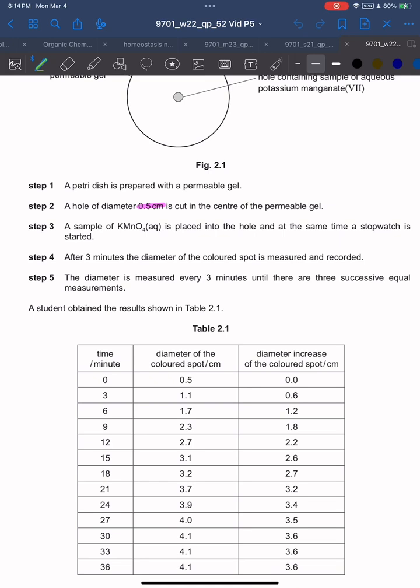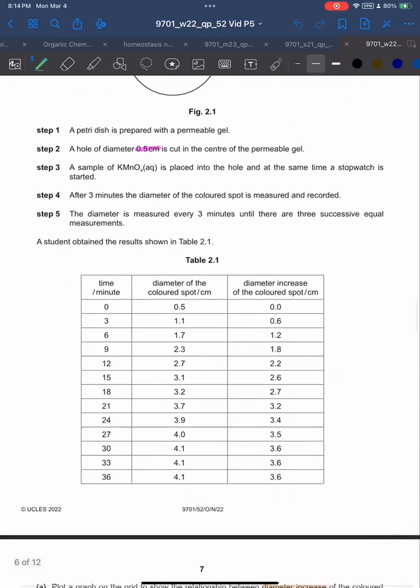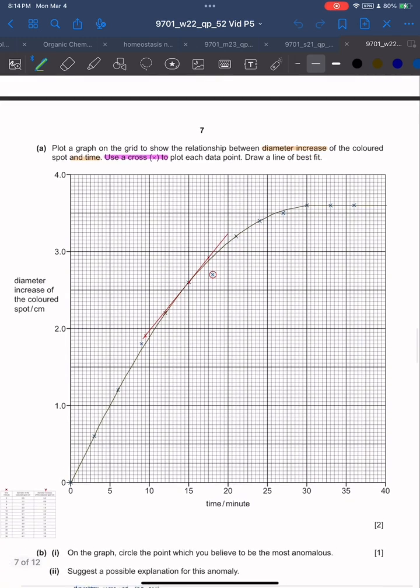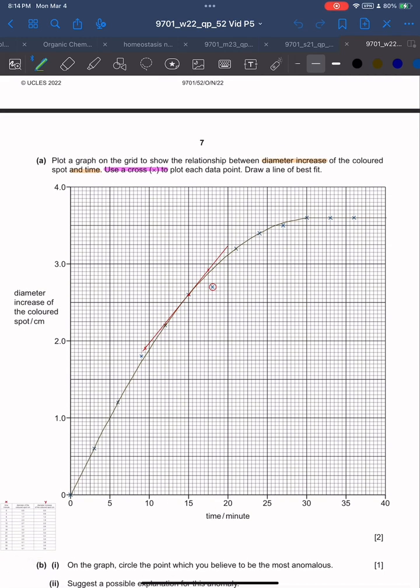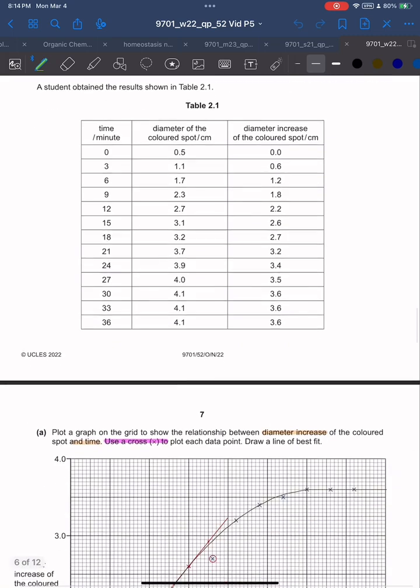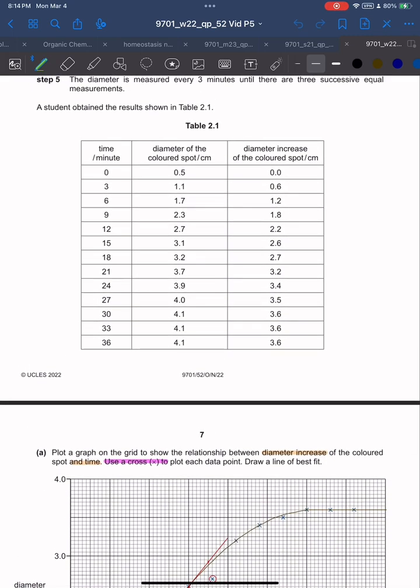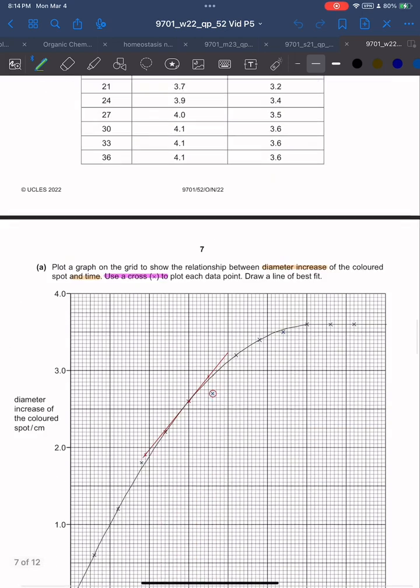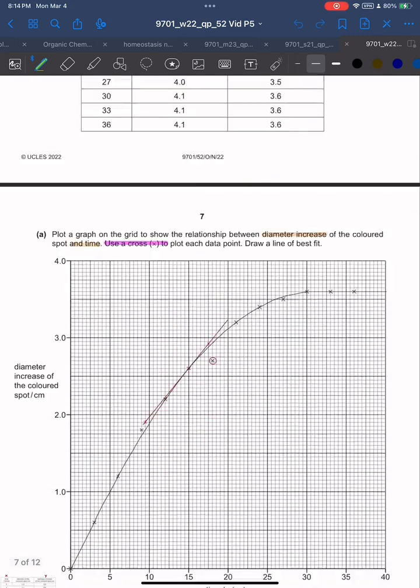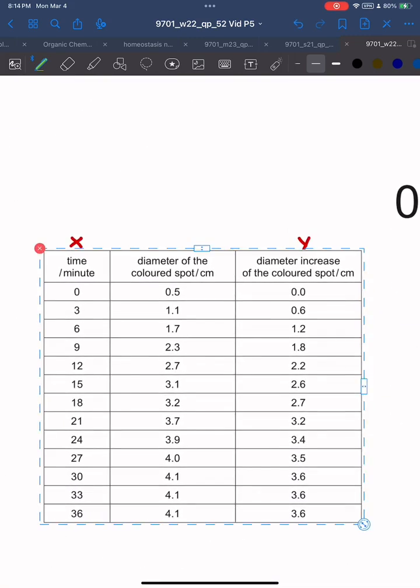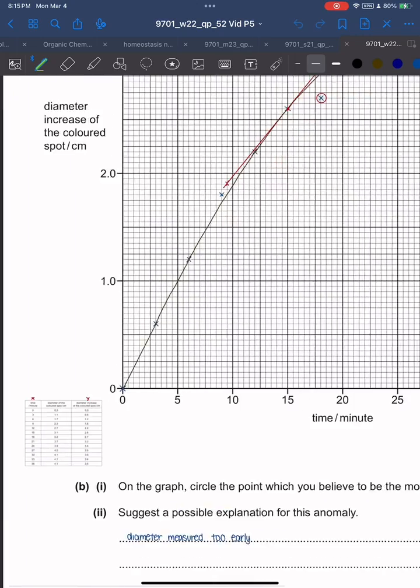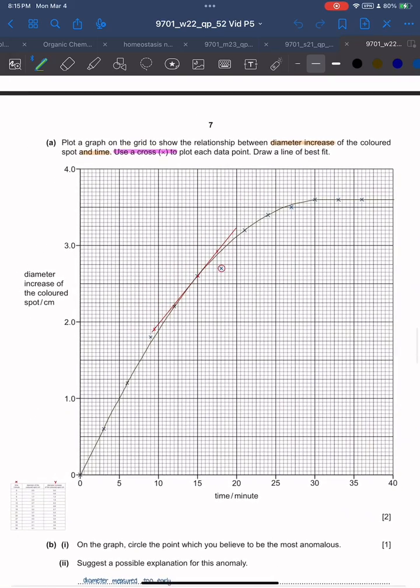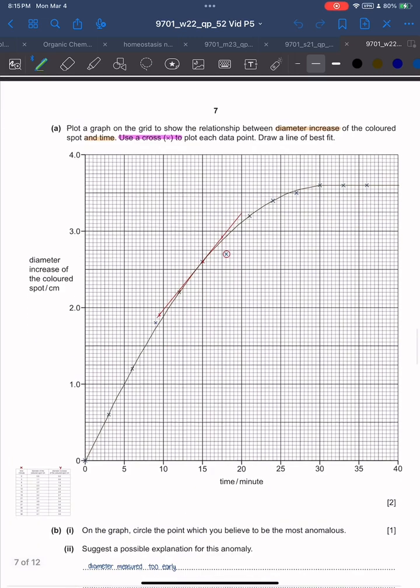The diameter is measured every 3 minutes until there are three successive equal measurements. Plot a graph on the grid to show the relationship between diameter increase of the colored spot and time. You just plot the diameter increase on the y-axis and time on the x-axis. I've plotted the points there.